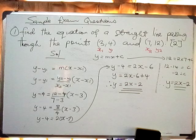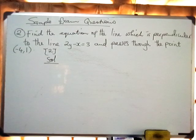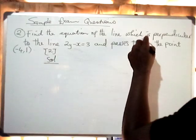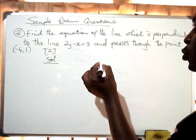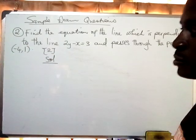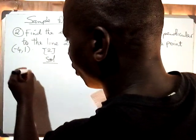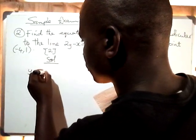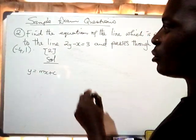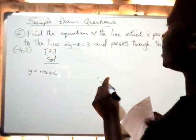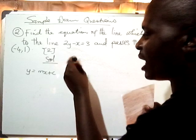Let us see another exam question and see how it can be handled. Find the equation of the line which is perpendicular to the line 2y minus x equals 3 and passes through a given point. The equation of the line is always in the form y equals mx plus c.